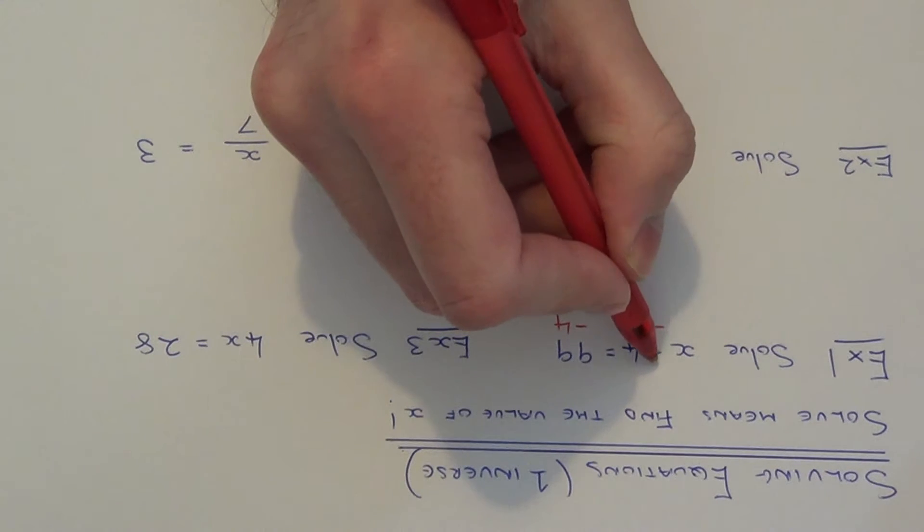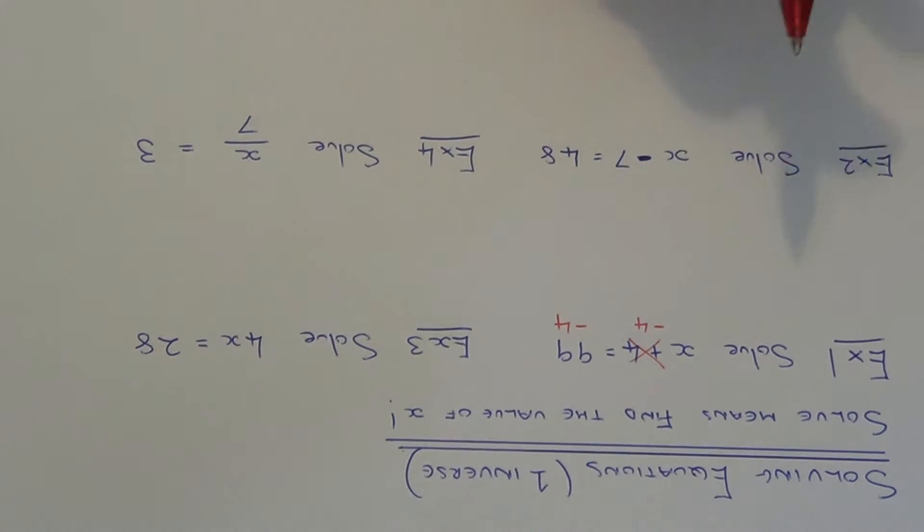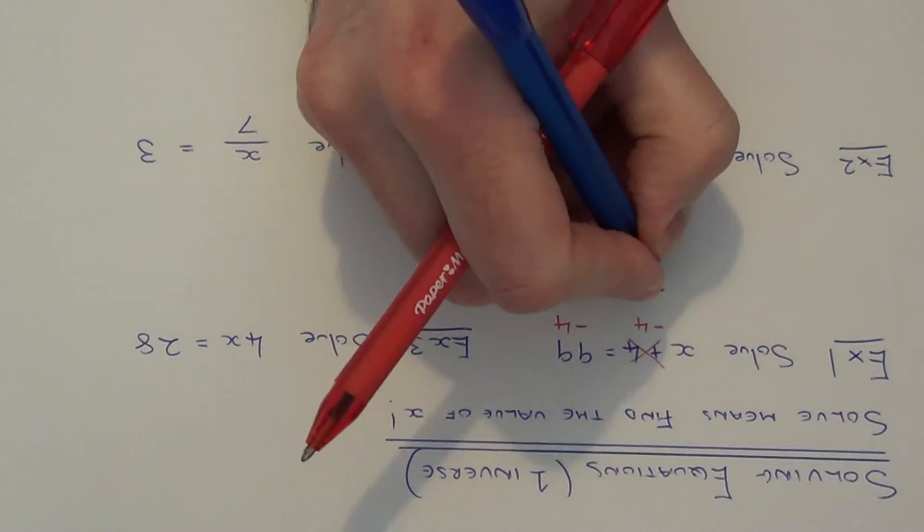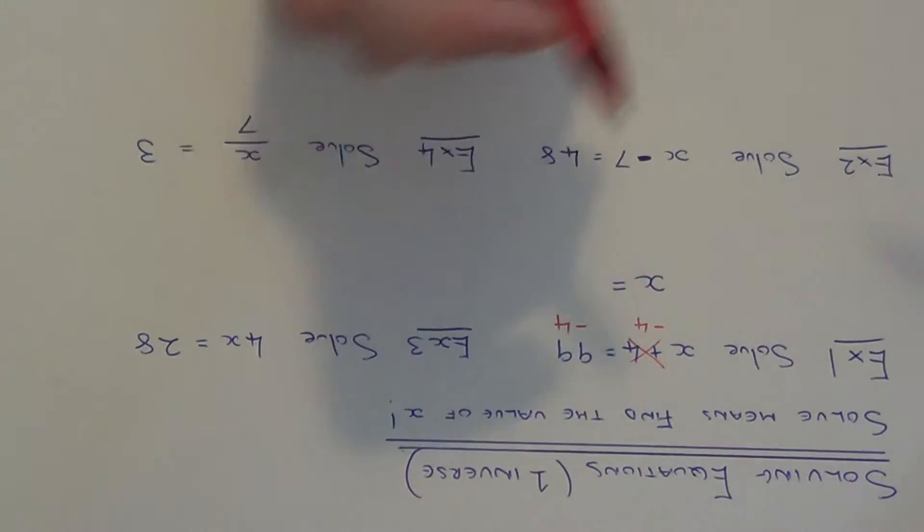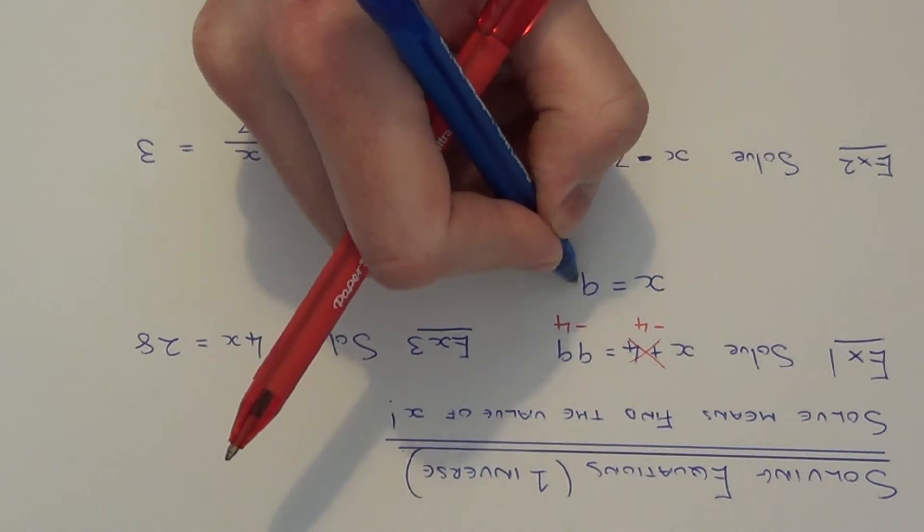This will get rid of the 4 on the left hand side and leave us with x. So 99 take away 4 will give us 95.